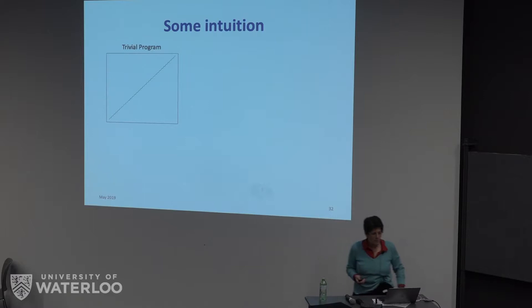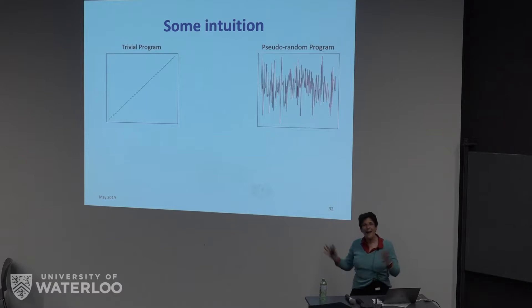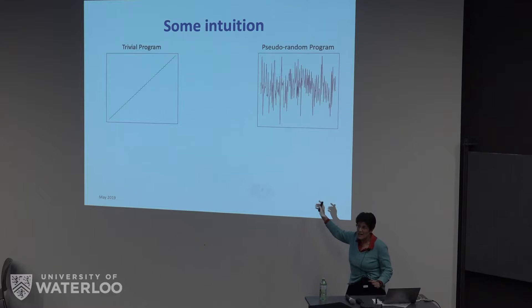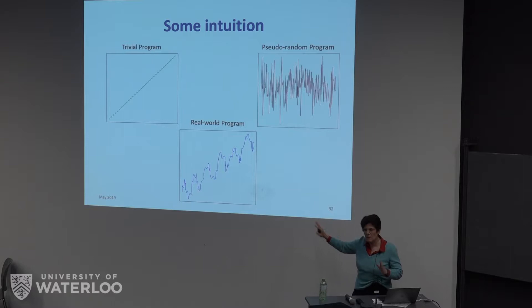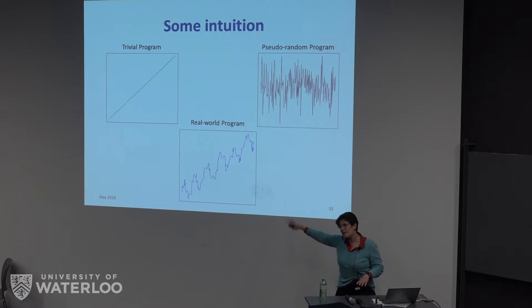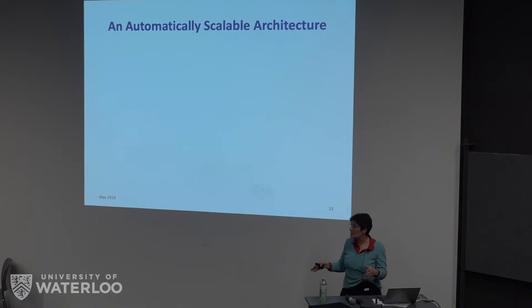Let's build some intuition. If I showed you a nice regular trajectory and asked if you could build a predictor for it, everyone would say yes. If I showed you RSA encryption — let's hope that produces trajectories that are impossible to predict. In reality, many programs look kind of in between, and you can imagine building a predictor for certain points in that trajectory. So, for programs with trajectories of this flavor, maybe we can actually build some models.